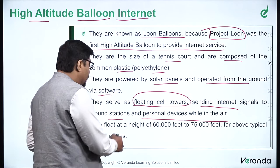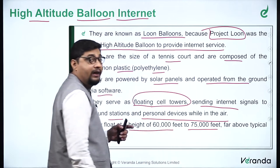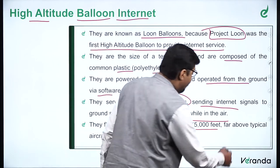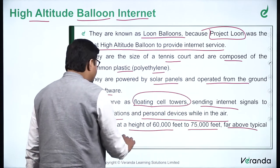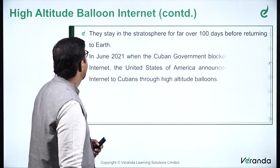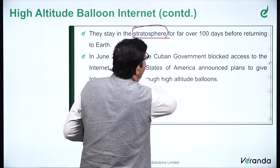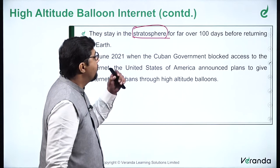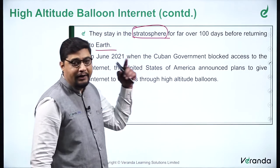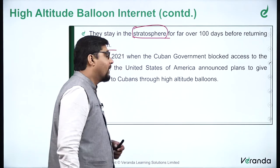These balloons float at a height of 60,000 feet to 75,000 feet — aeroplanes don't fly at this level, so they are far above the typical aircraft routes. They stay in the stratosphere — remember this — and are meant to stay in the stratosphere for over 100 days before returning to the earth.